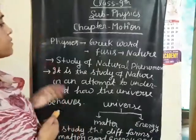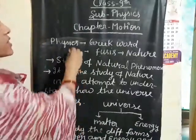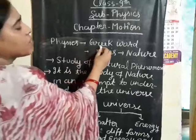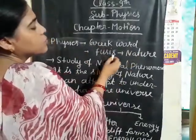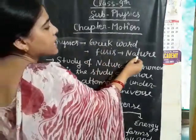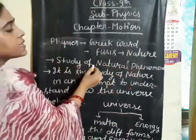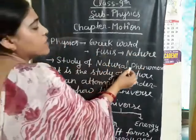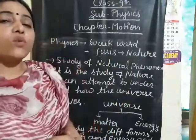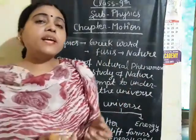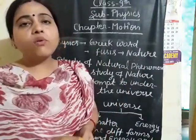Let us understand what is physics. Physics comes from the Greek word 'phusis'. Phusis means nature. Physics is the study of natural phenomena. Natural phenomena, for example, twinkling stars, planetary motion, and an apple falling.